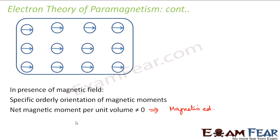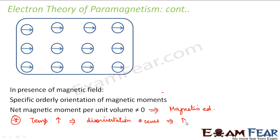That is why we say that for a paramagnetic substance, the magnetic susceptibility decreases with increase in temperature. When we increase the temperature, we are heating the object, the molecules start moving randomly, and as soon as random motion starts, magnetization is lost — the substance gets demagnetized and the net magnetic moment per unit volume becomes zero. So susceptibility decreases with increase in temperature.